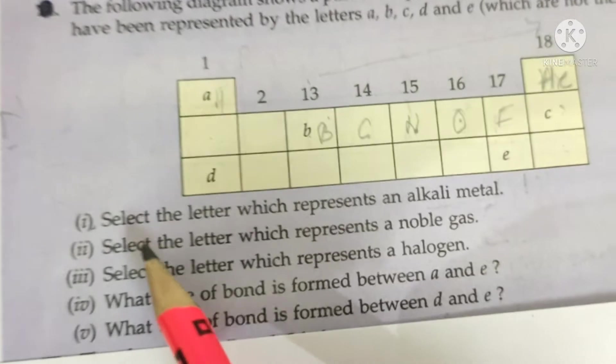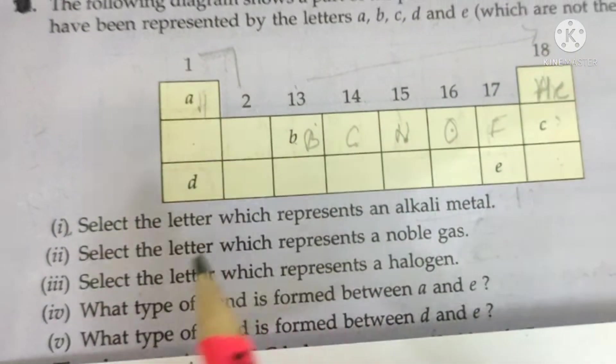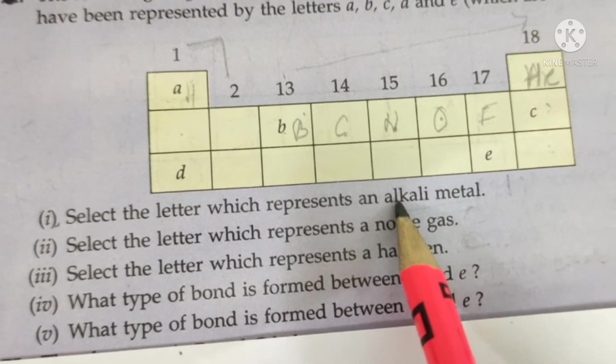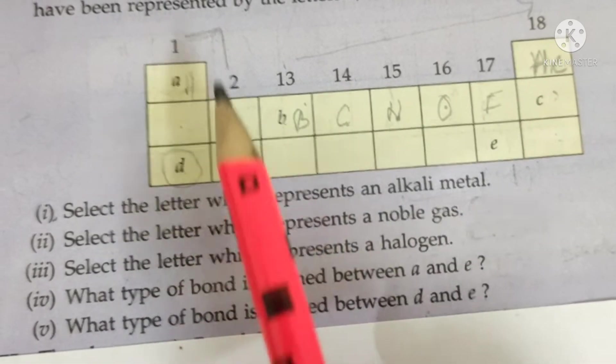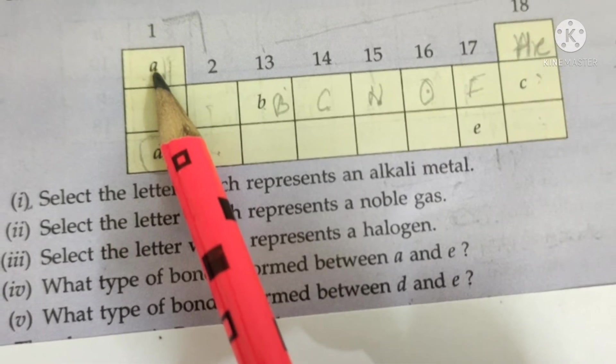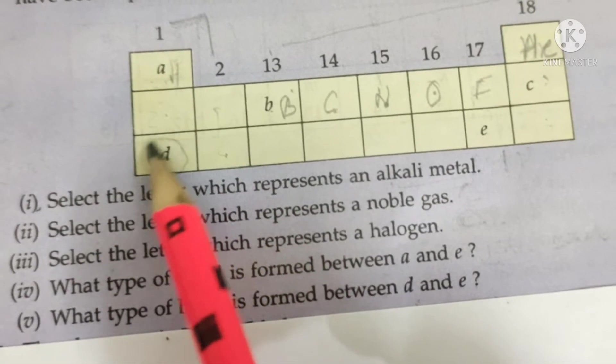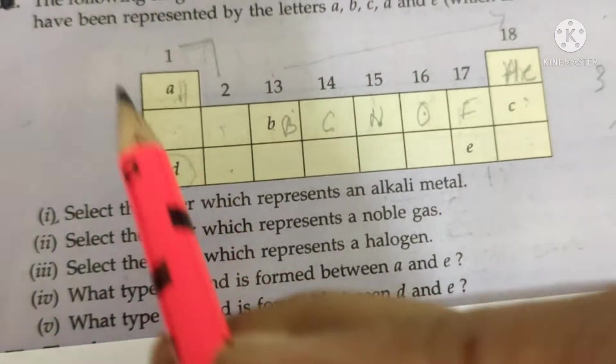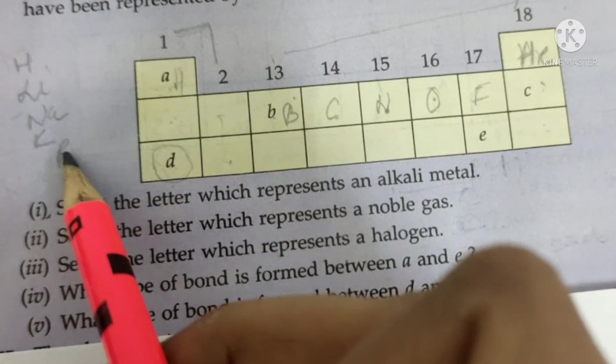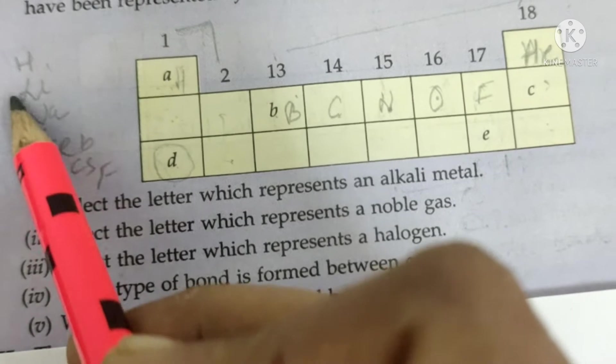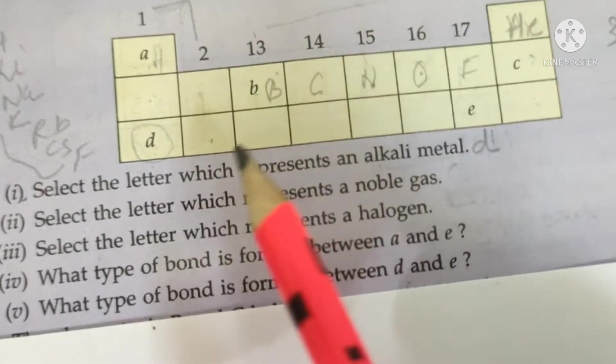let's find out the answer number 1. Select the letter which represents the alkali metal. Alkali metal will be here and here. So in this, nothing is given here. So alkali metal is only this one. You will say, why not A? A is not because first is hydrogen. Hydrogen, although it is placed in this group, but it is not a metal. But in this group, all metals come - lithium, sodium. So the answer is D. First answer is D. Next.